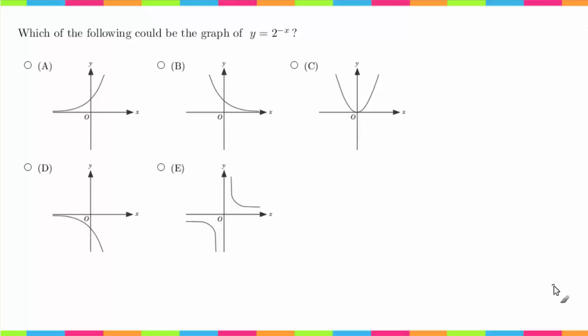Assuming you don't have your parent functions memorized, a parent function is basically just what a general graph looks like. So what x squared looks like, what the absolute value of x looks like—all of those are called parent functions. And then anything you do to those is a transformation.